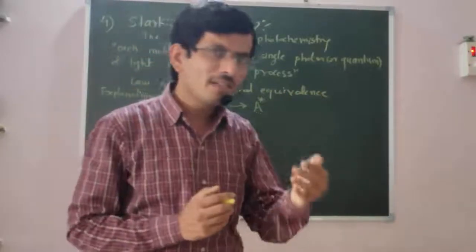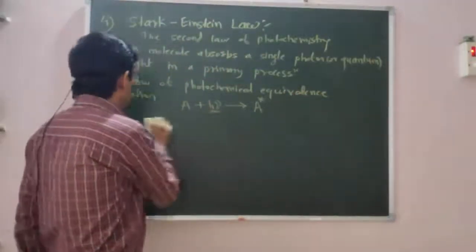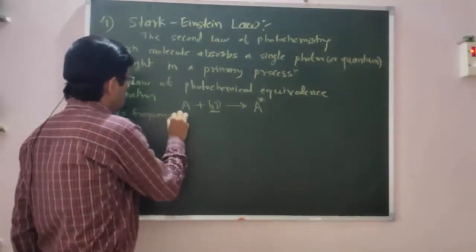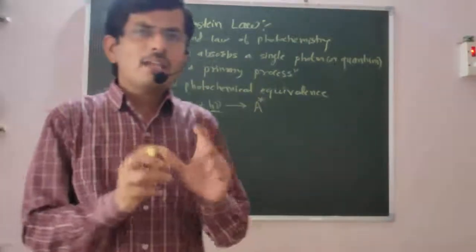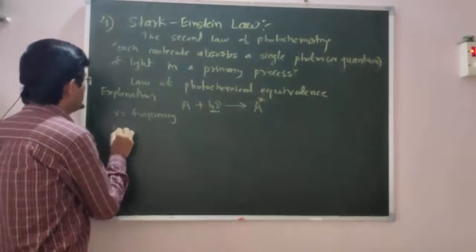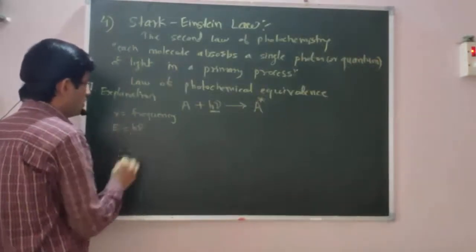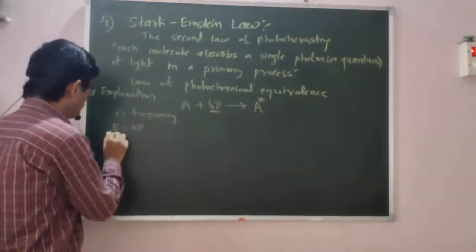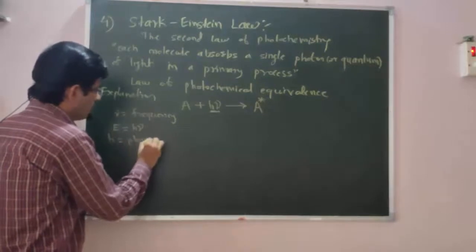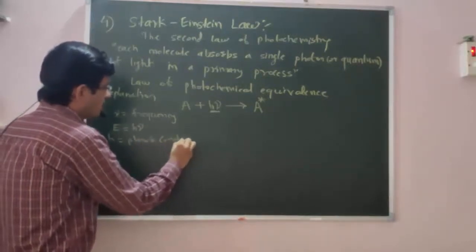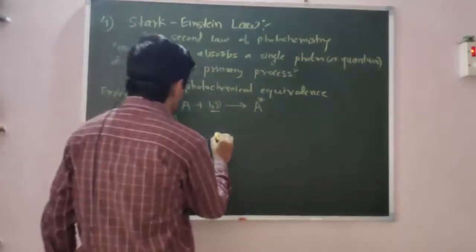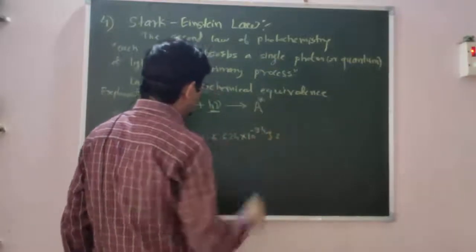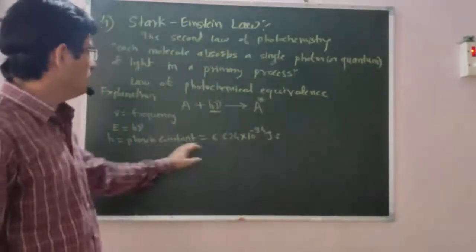In this equation, this ν represents frequency, frequency of photon. So the energy associated with this photon is given by the equation E is equal to h into ν, where ν is the frequency of light radiation, and h is the Planck's constant. h is equal to 6.624 into 10 raised to minus 34 Joule seconds.